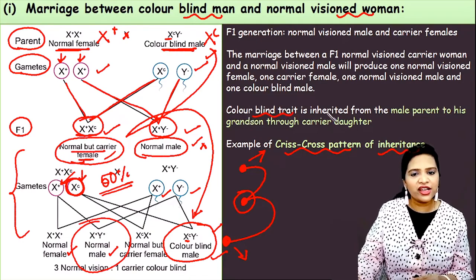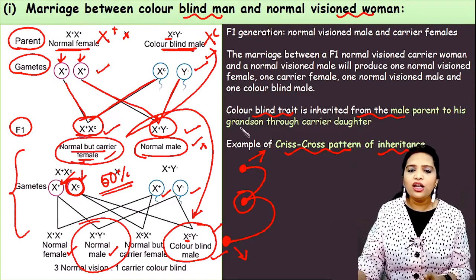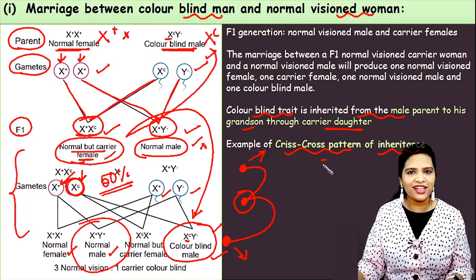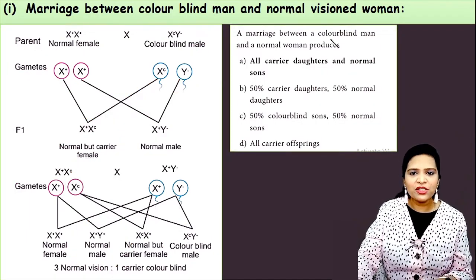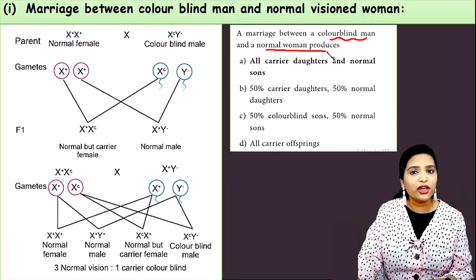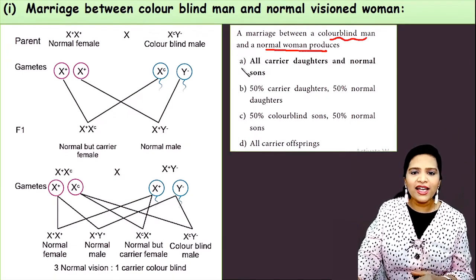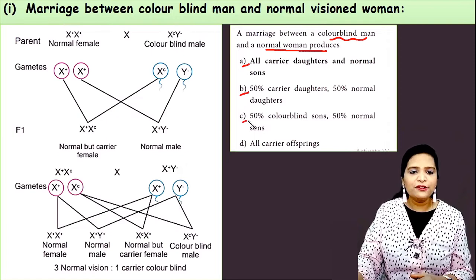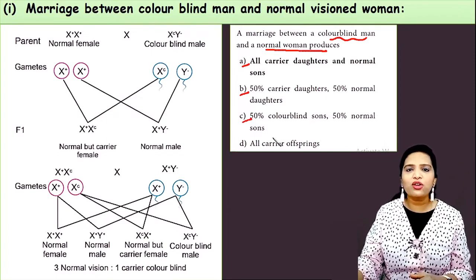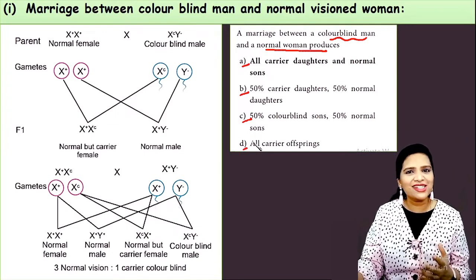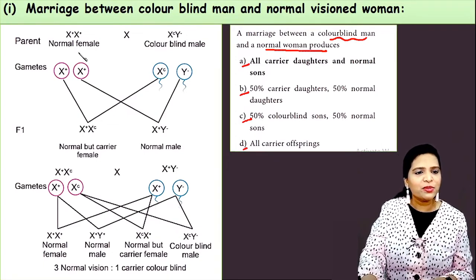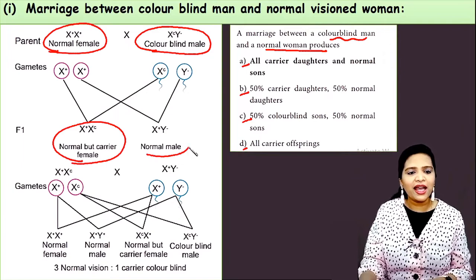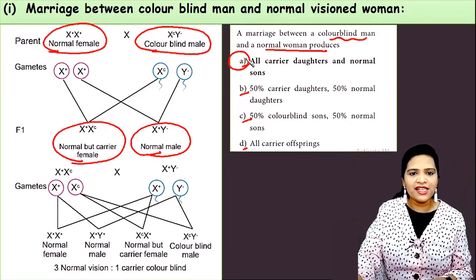The colorblind trait is inherited from the male parent to his grandson through the carrier daughter — this is why we call it the crisscross pattern of inheritance. A marriage between a colorblind man and a normal woman produces: all carrier daughters and normal sons. So the answer to that question is option A.